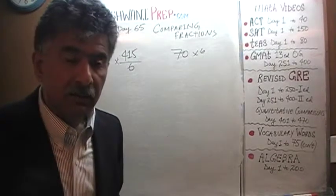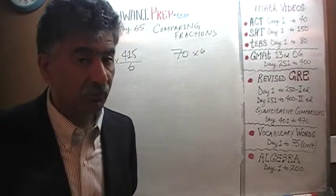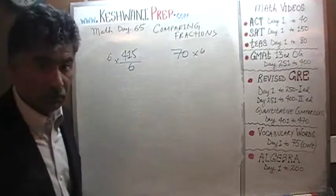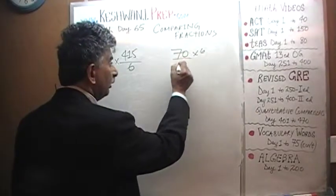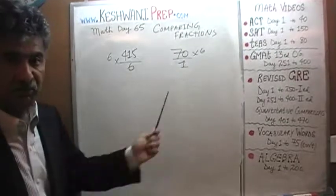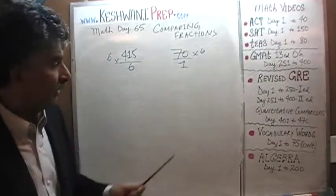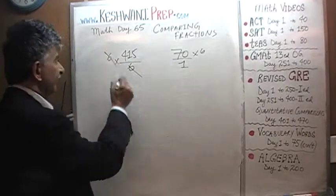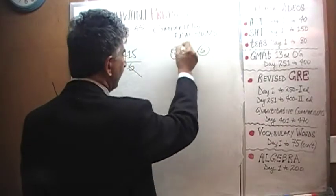But it is in fact the two fractions. This is what we are dealing with here because the 70 could be actually looked upon, treated as a fraction. There is a fraction, there is a fraction. Let's multiply both fractions by 6. This 6 kills that 6. Here we end up with 6 times 70.